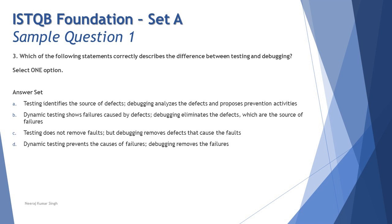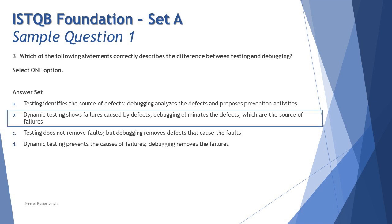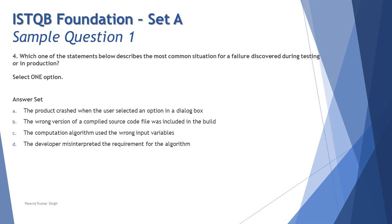The trick here is that they used 'testing' and 'dynamic testing' to confuse you. Testing is a generic term, broken down into static and dynamic — both help you only find defects. As a tester in static testing, you only find defects, but the authors of the documentation remove them. So the right answer is B: dynamic testing shows failures caused by defects; debugging eliminates the defects which are the source of failures, by finding the root cause.